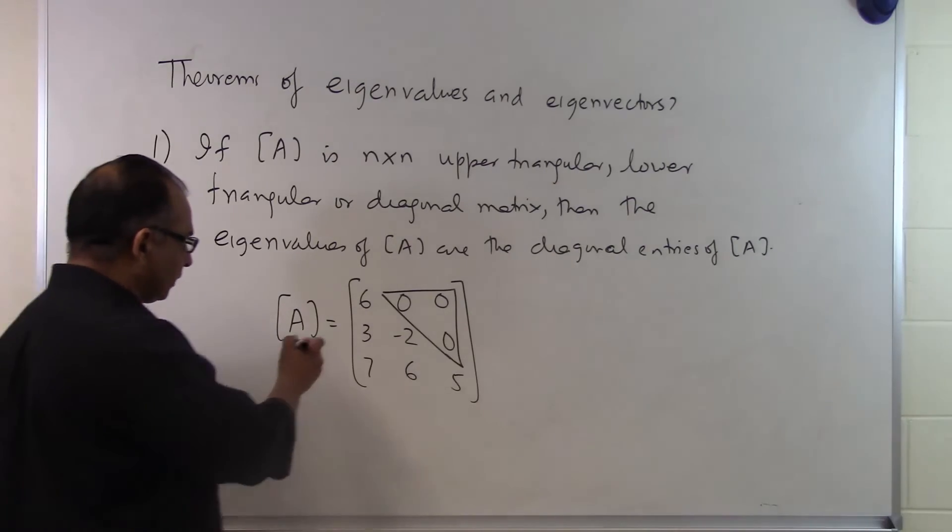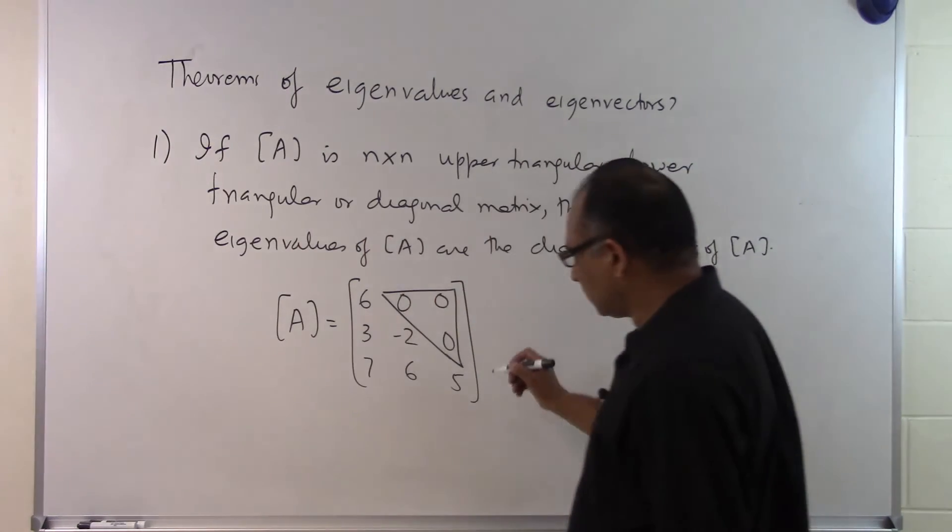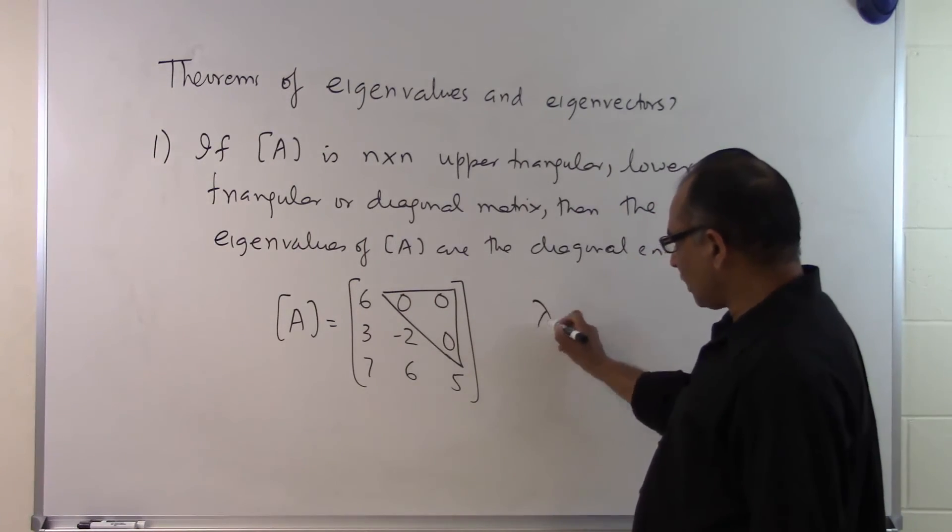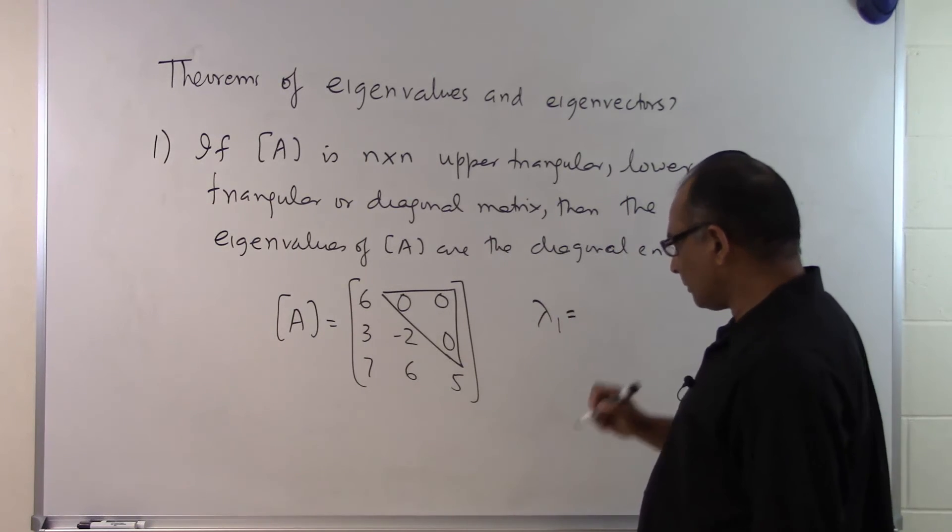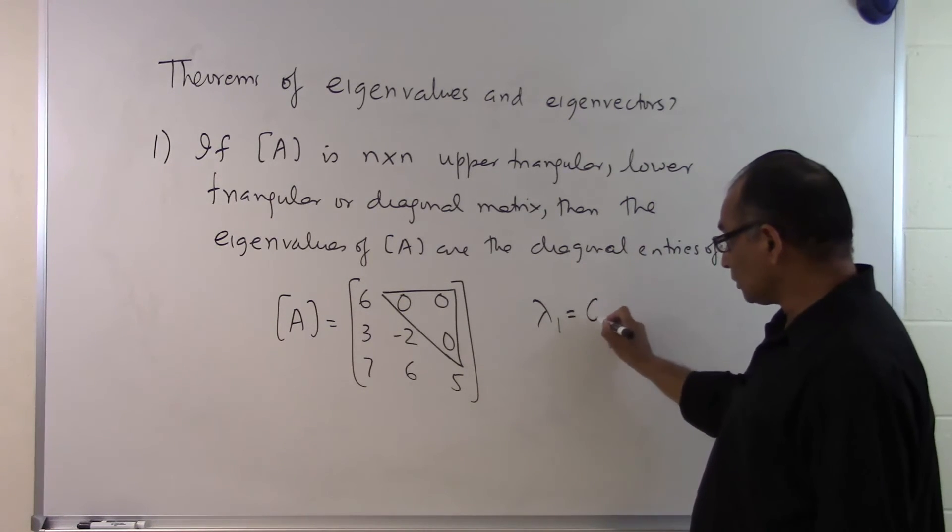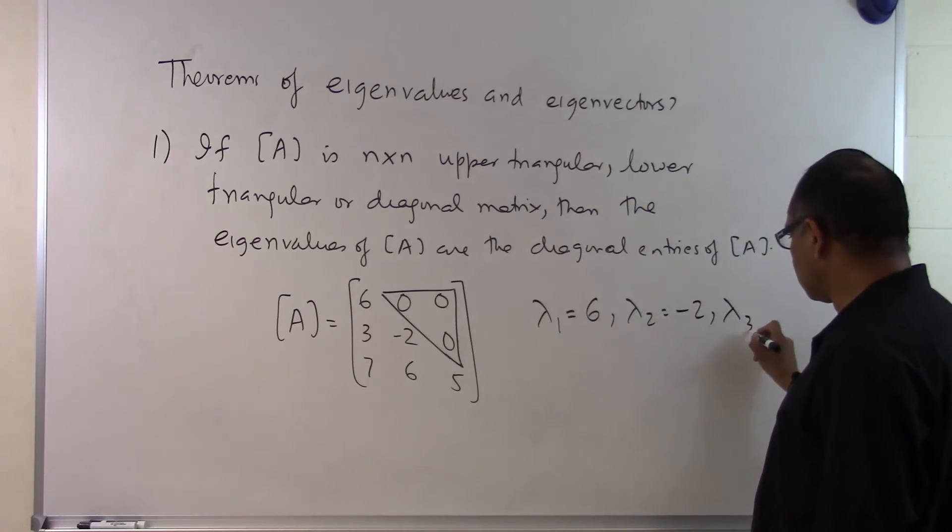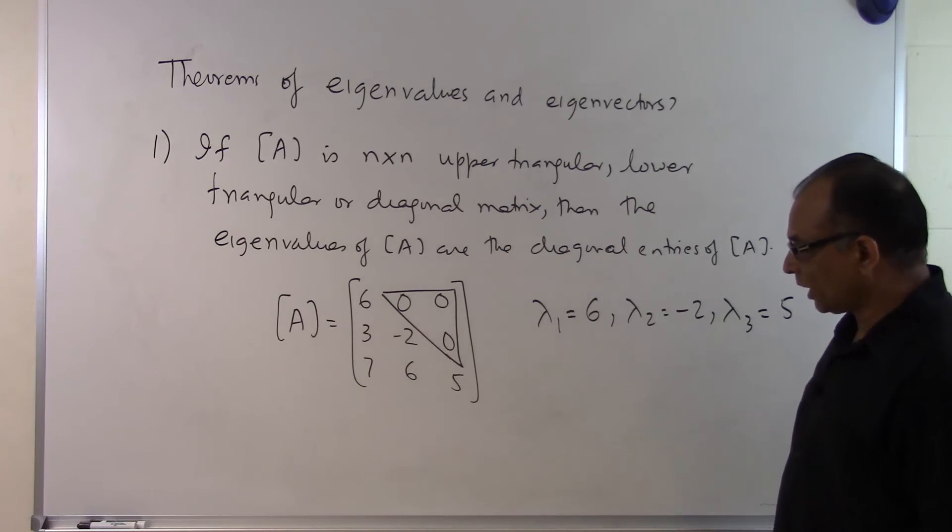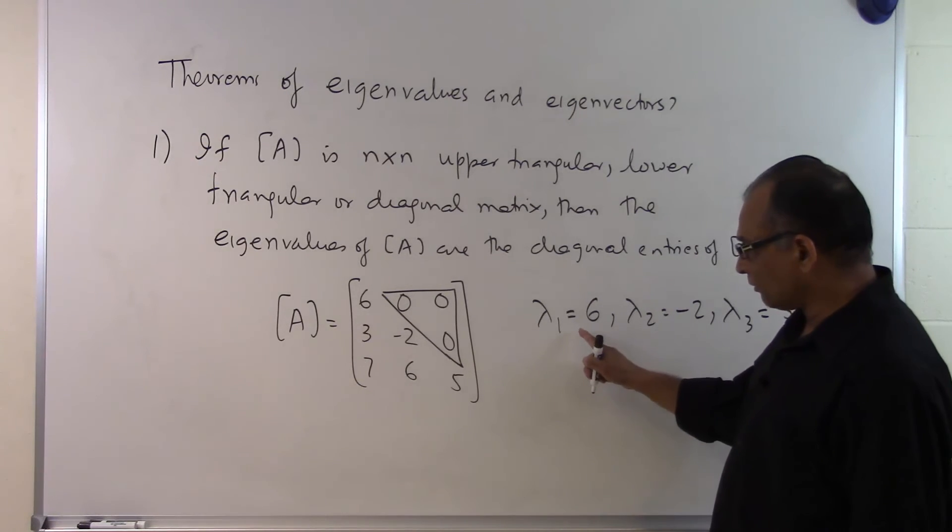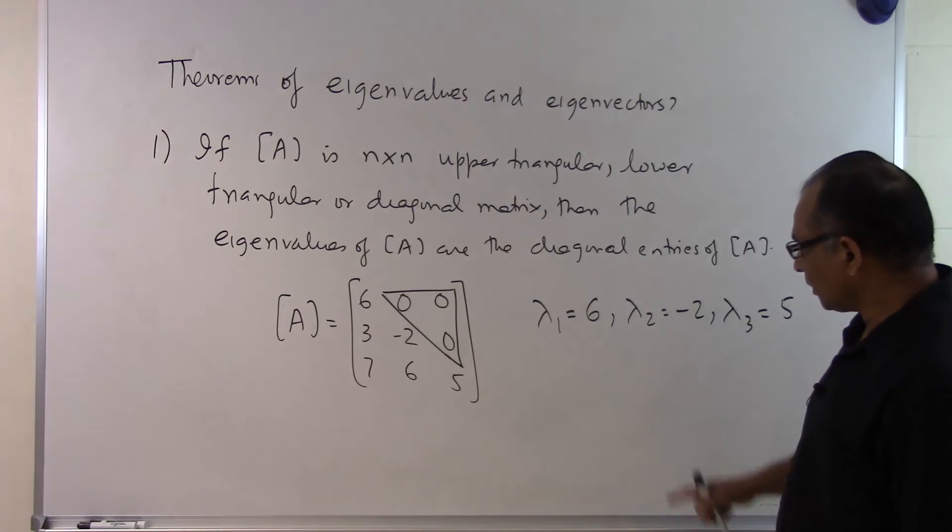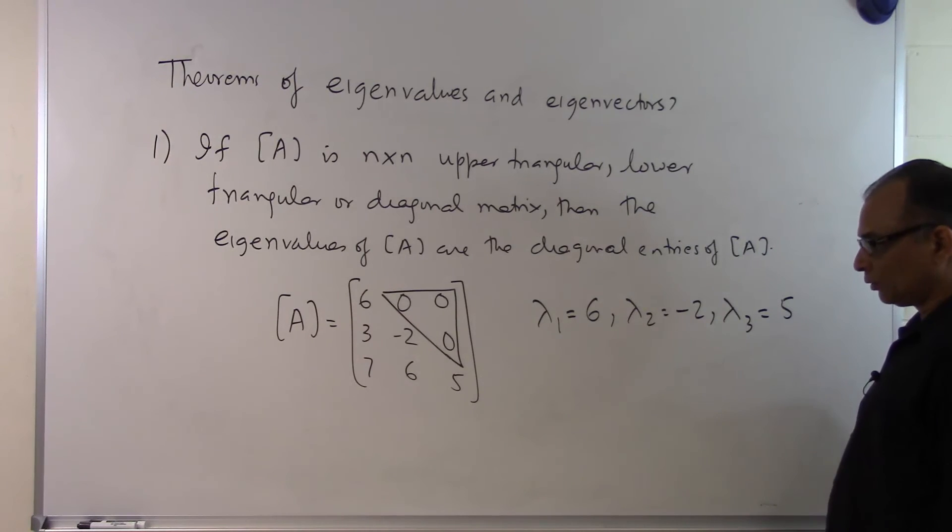In this case the three eigenvalues which you will get for this particular lower triangular matrix will be lambda 1 equal to 6, lambda 2 equal to minus 2, and lambda 3 equal to 5.